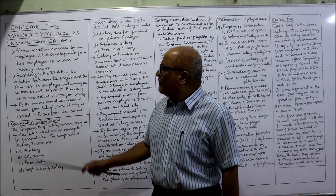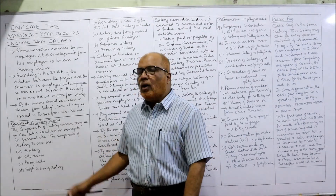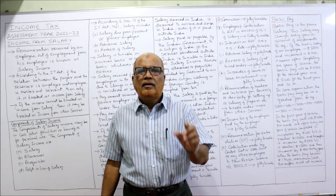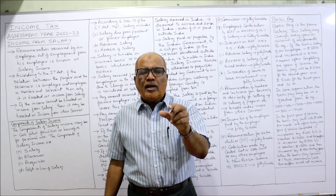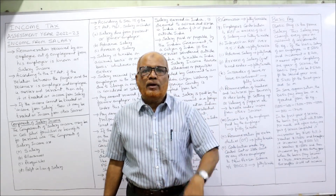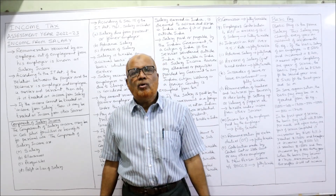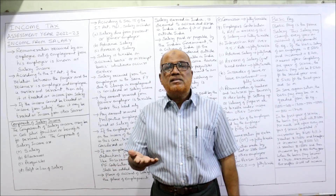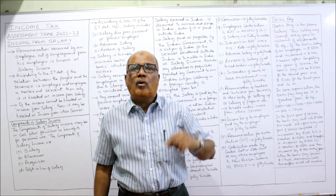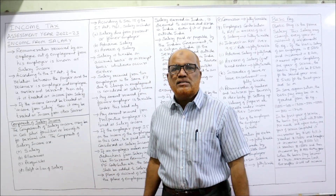Income from salary: first of all, remuneration received by an employee out of employment from the employer will be treated as salary. Any remuneration received by the employee out of employment from the employer — that income will be treated as salary. The Income Tax Act has given the provision that if a person is receiving remuneration from another person, the employer, out of employment, then only it will be treated as income from salary.